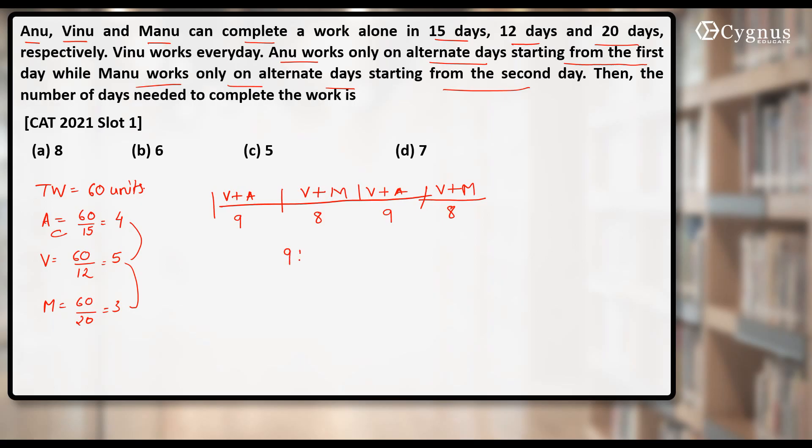So can we say in every two days, they will be able to finish 9 plus 8, that is 17 units? This is the work done in two days, and we know that in every two days, the work done will be 17.